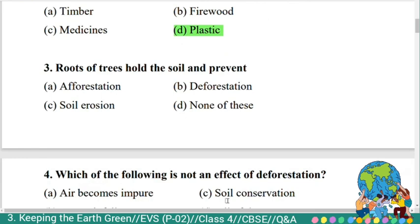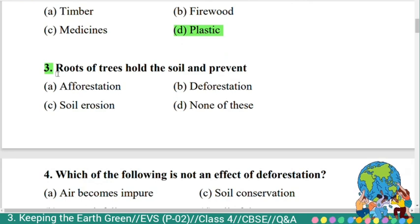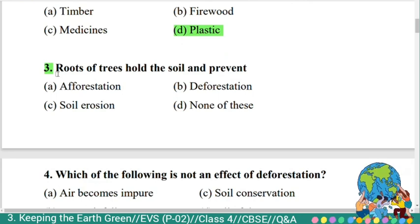Third question: 'Roots of trees hold the soil and prevent blank. Option A: Aquaristation. B: Deforestation. C: Soil erosion. D: None of these.' The correct answer is soil erosion.